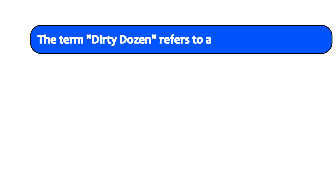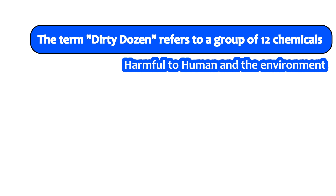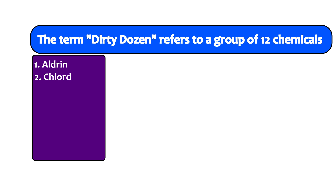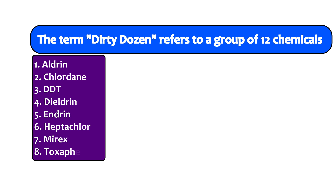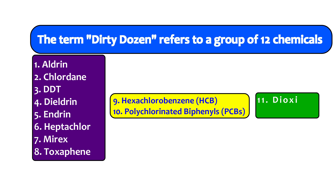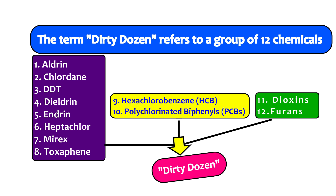To start with, the term dirty dozen refers to a group of 12 chemicals which has been identified and specified as chemicals that are toxic and harmful to humans and the environment. The names of the 12 dangerous chemicals are: aldrin, chlordane, DDT, dieldrin, endrin, heptachlor, mirex, toxaphene, hexachlorobenzene, polychlorinated biphenyls, dioxins, and furans. Cumulatively, all these 12 chemicals are referred to as the dirty dozen.